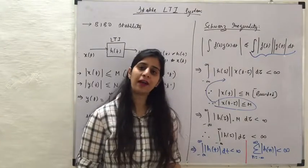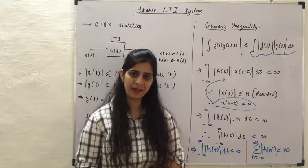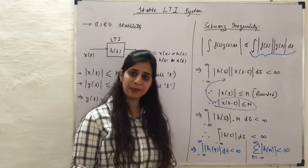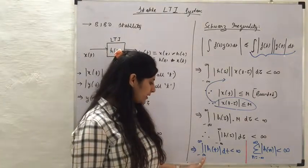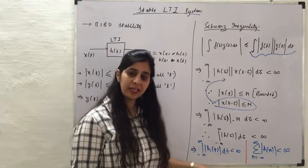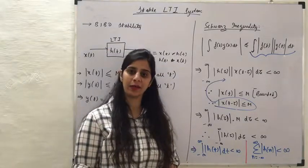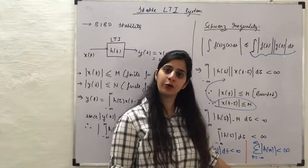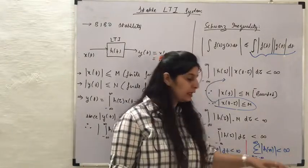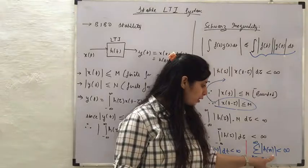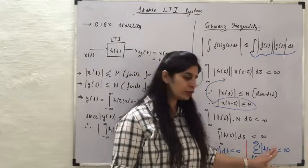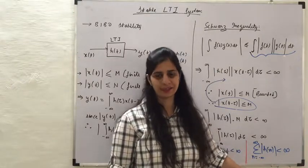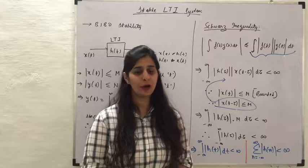For a continuous-time LTI system to be stable, the impulse response of the system must be absolutely integrable — meaning that integrating this function from minus infinity to infinity should give a finite value. Similarly, for a discrete-time LTI system to be stable, the summation of the impulse response should give a finite value.